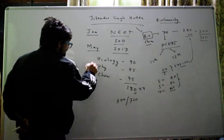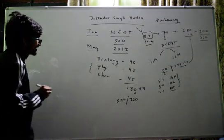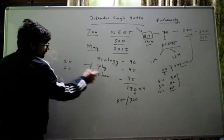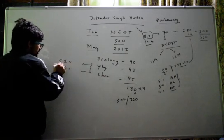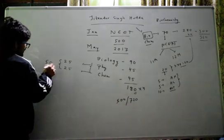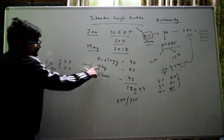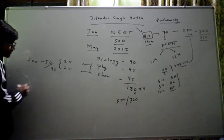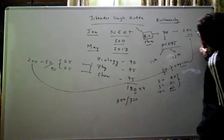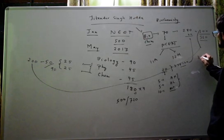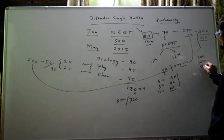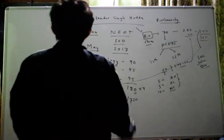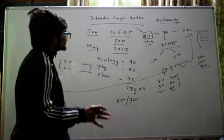Moving to physics and chemistry: out of 45 questions each, if you attempt 25 questions correctly in physics and 25 in chemistry, that gives you 50 correct answers from both subjects combined. Multiplying by 4 marks each, you get 200 marks. Adding this to the 300 marks from biology gives you a total score of 500 — quite easily.